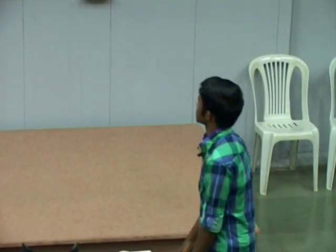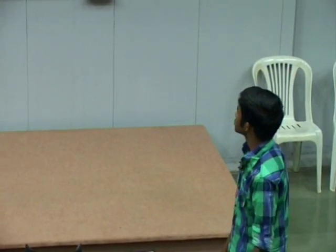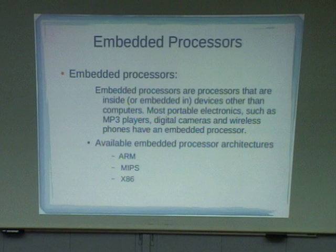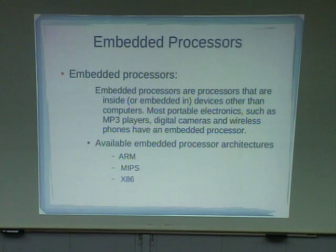Now coming to embedded processors. What is the difference between original personal computers and embedded processors? We know the limitations in embedded systems: the CPU is very low, memory is very less, and it should consume very less power. Based on these parameters, we should design processors accordingly. There are different types of architectures available to support embedded processors: ARM, MIPS, and x86.